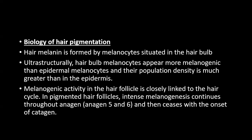The melanogenic activity in the hair follicle is closely linked to the hair cycle. In pigmented hair follicles, there is increased melanogenesis that continues throughout the anagen phase — that is anagen 5 and anagen 6 — and then ceases with the onset of the catagen phase. So pigmentation and growth of hair continue hand in hand. As the hair keeps growing, it keeps accumulating more pigment. Once the anagen phase ends, melanogenesis also ends.